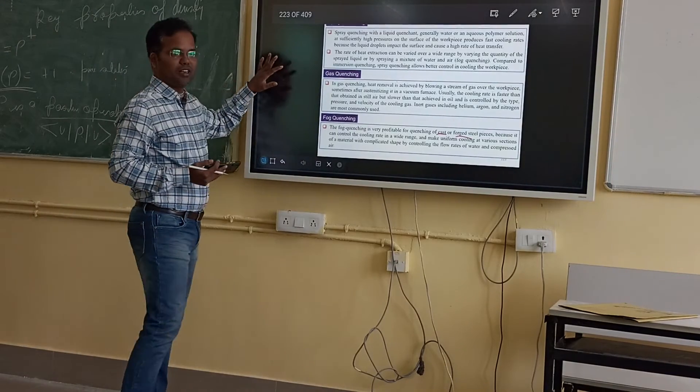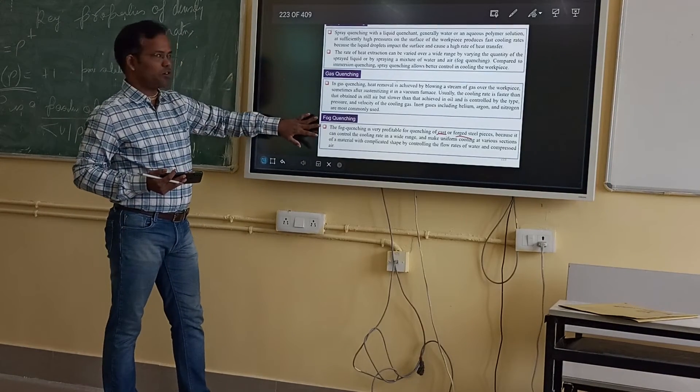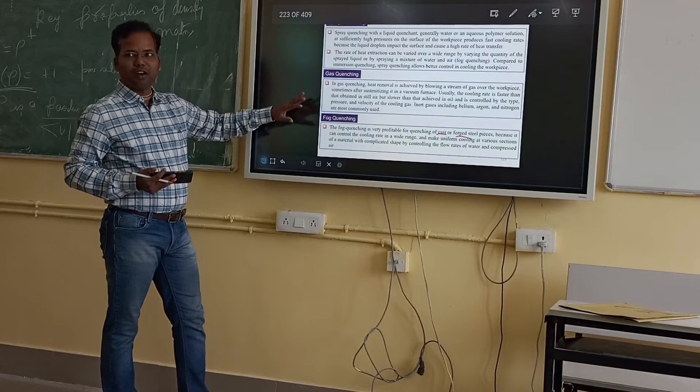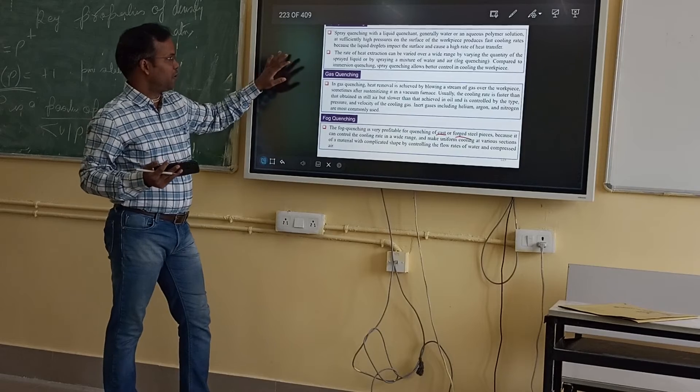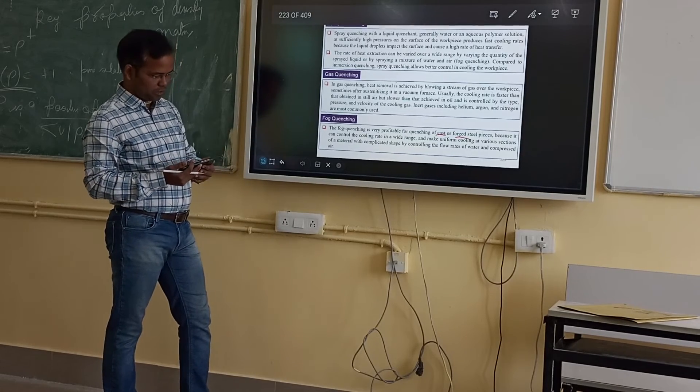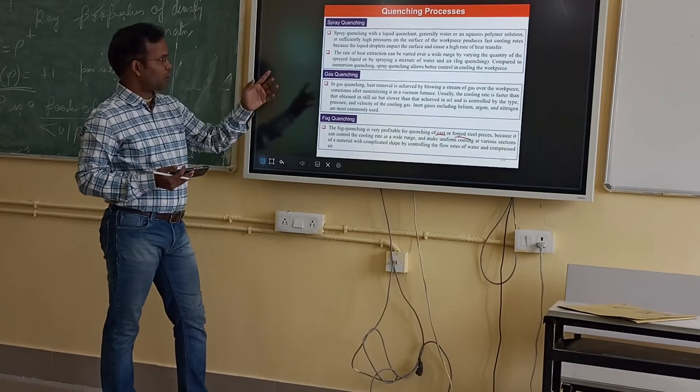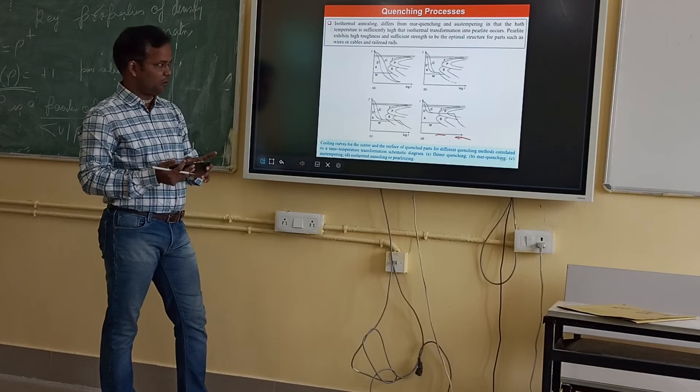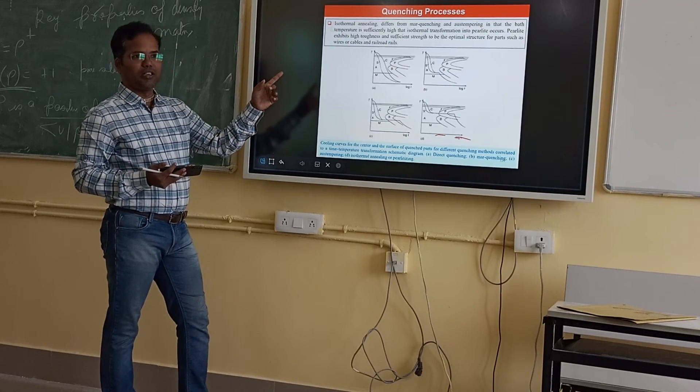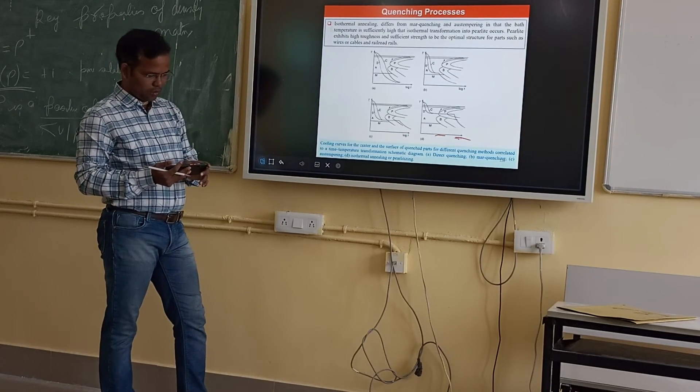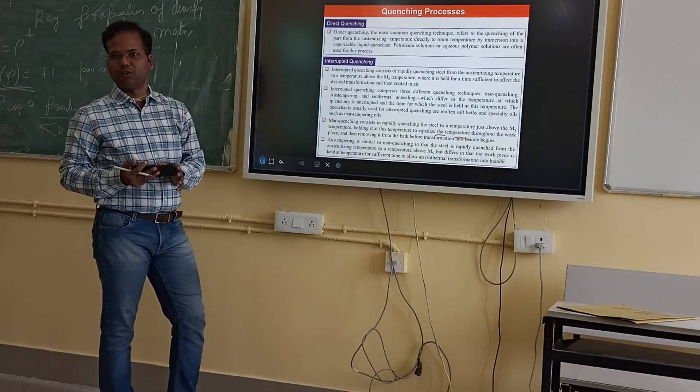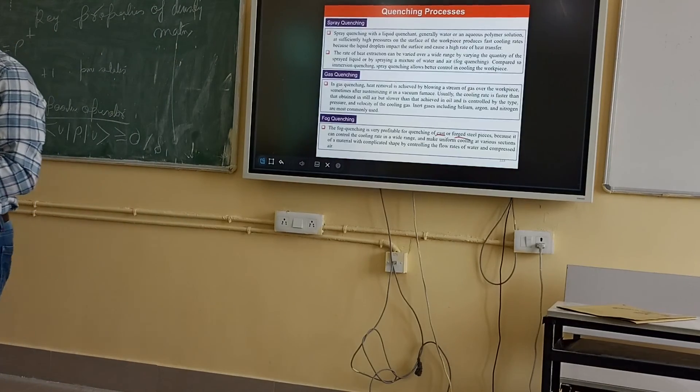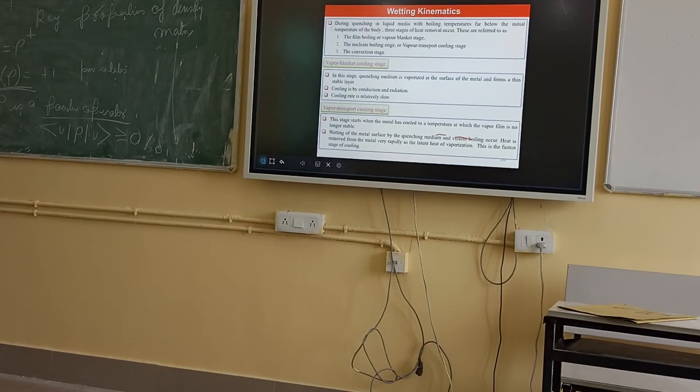These quenching methods are done differently. Gas quenching and fog quenching are generally done for very large size specimens. But spray quenching can be done for very intricate shapes. Spray quenching can be done for small pieces.